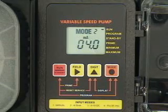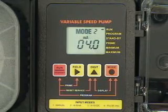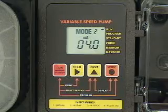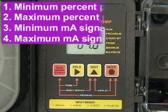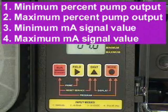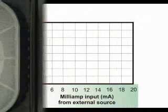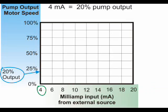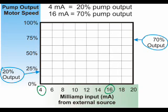When operating in mode number two, the 4 to 20 milliamp mode, the pump's output speed will adjust automatically based on the value of the 4 to 20 milliamp input signal. Four values can be programmed: the minimum and maximum percentages of pump output and the corresponding minimum and maximum milliamp input signal values. In this example, 4 milliamps will result in a pump output of 20% and 16 milliamps will result in a pump output of 70%. A linear pump output slope is created.